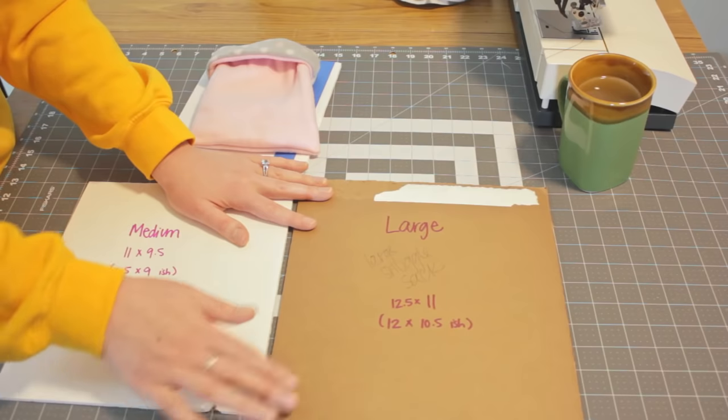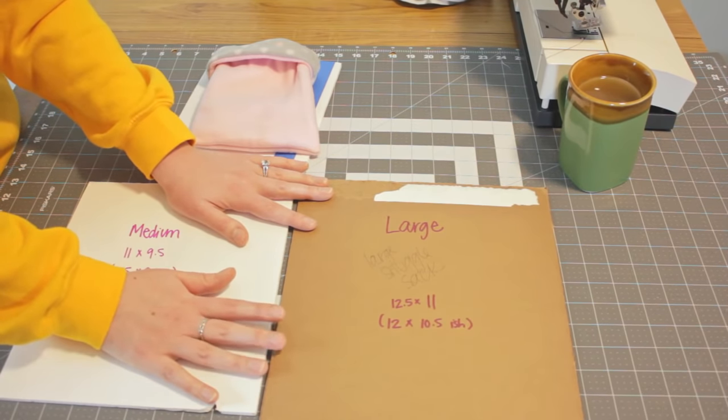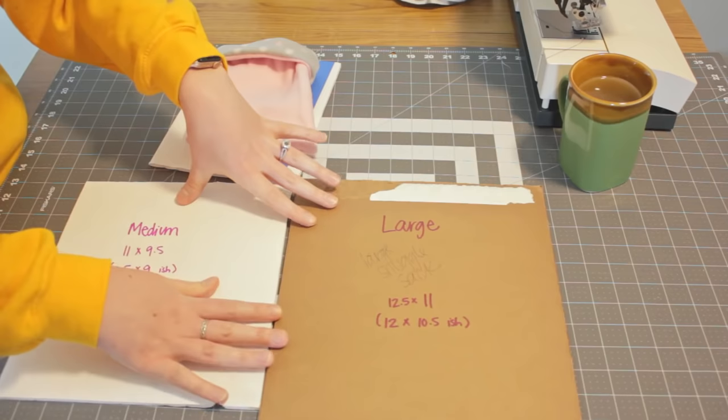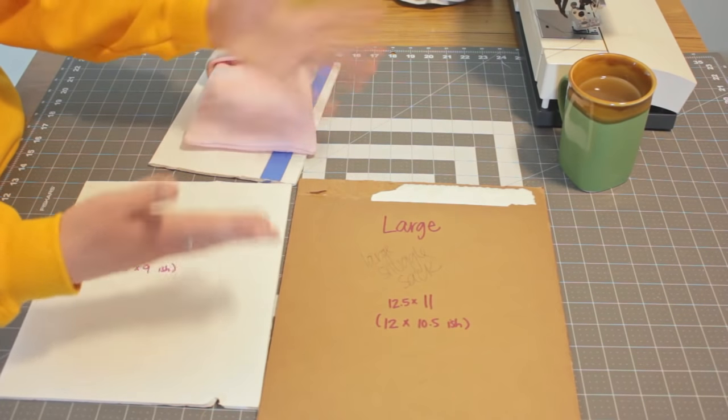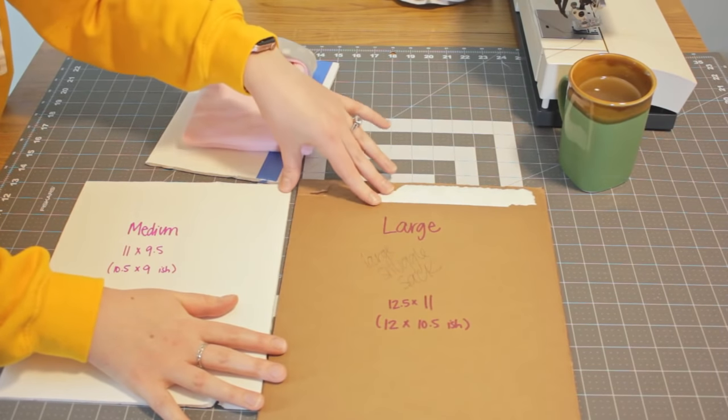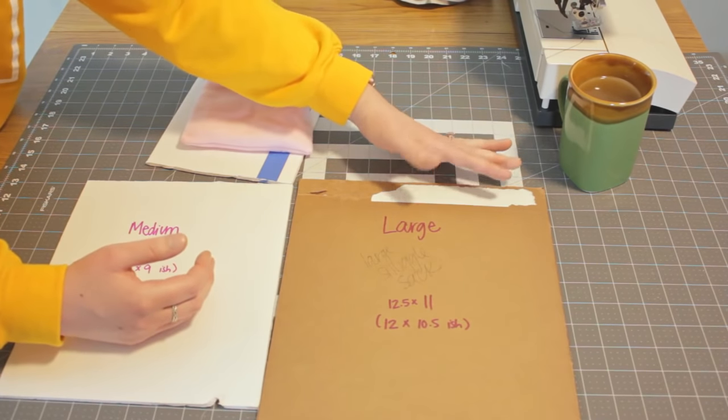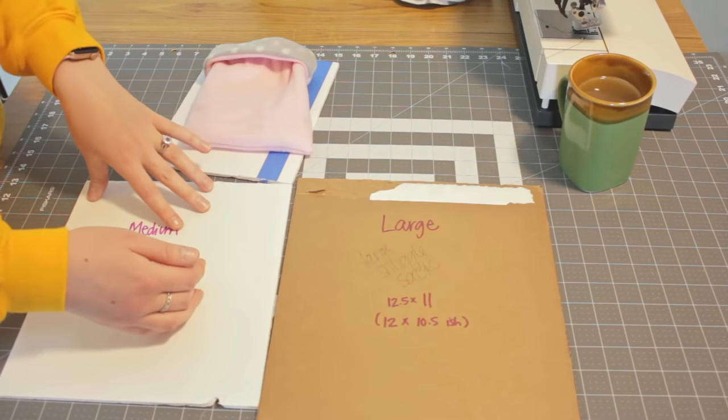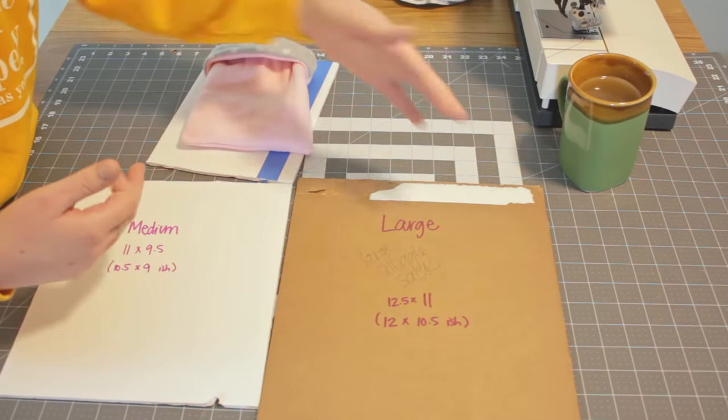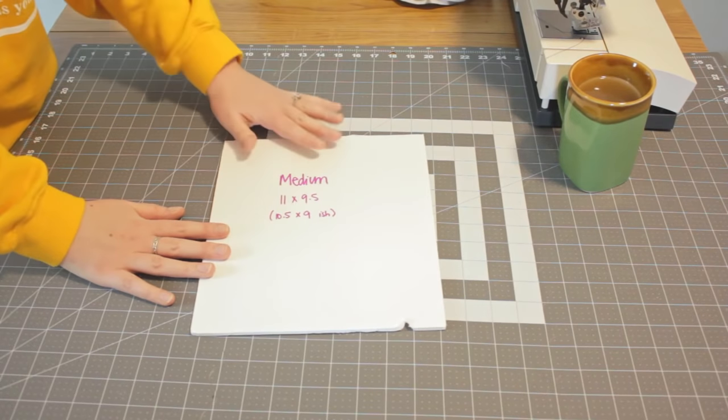The large is 12 and a half by 11 inches, which ends up making about a 12 inch by 10 and a half inch snuggle sack. So this would be for a small rabbit or something similar. If you want to make one for like your Flemish giant rabbit or something, then you will make a template or measure out your sack. And you're going to add a half inch to each measurement because we're using a quarter inch seam allowance. For this video, I'm going to make a medium.